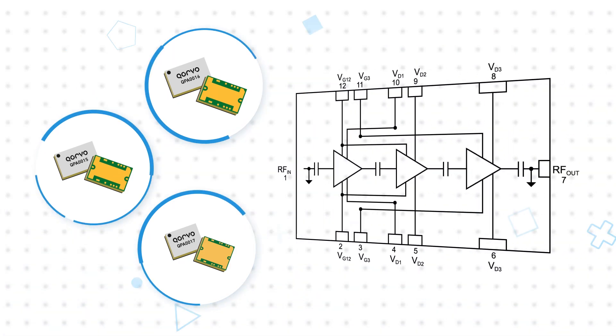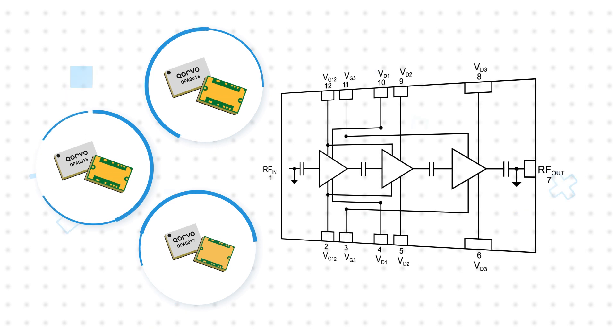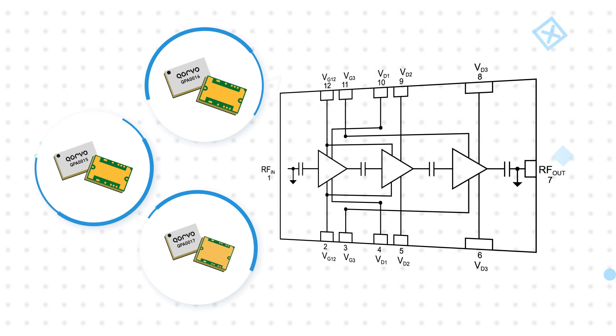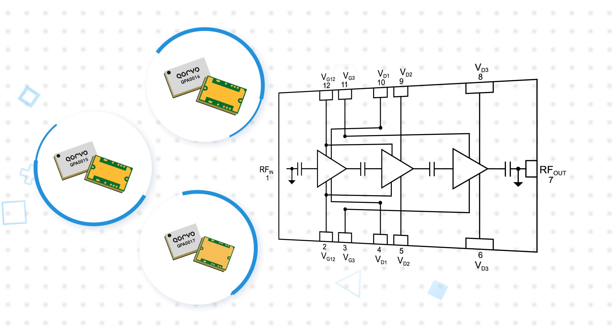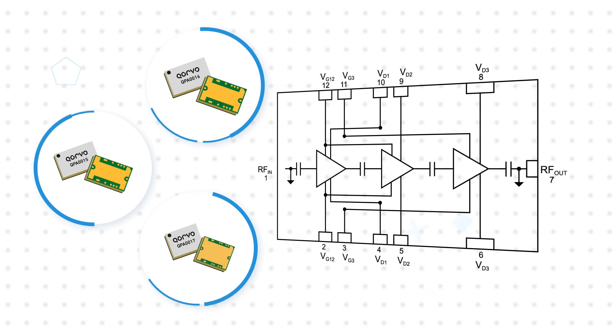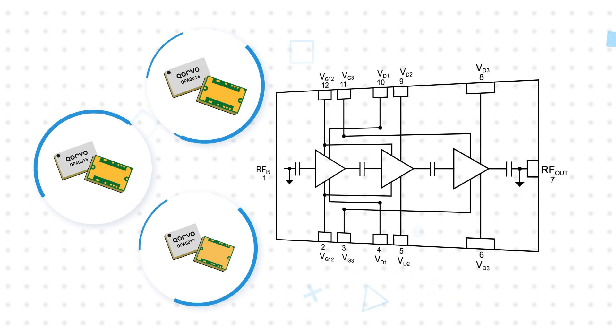The amplifiers feature compact surface mount packages with footprints from 7.5 x 4.5 mm to 7.5 x 6 mm, and this includes 50 ohm matched RF ports, simplifying the overall design.